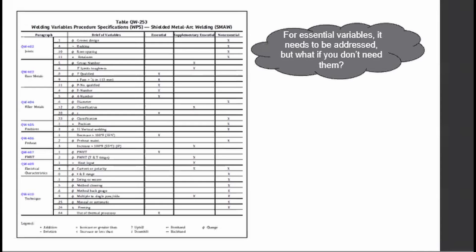You might have these questions in mind. For essential variables, they need to be addressed — but what if you don't need them? If you do not need to indicate certain variables, for example preheat or post-weld heat treatment, as some materials do not require them — like carbon steel pipes with thickness below 20 mm — just indicate none.